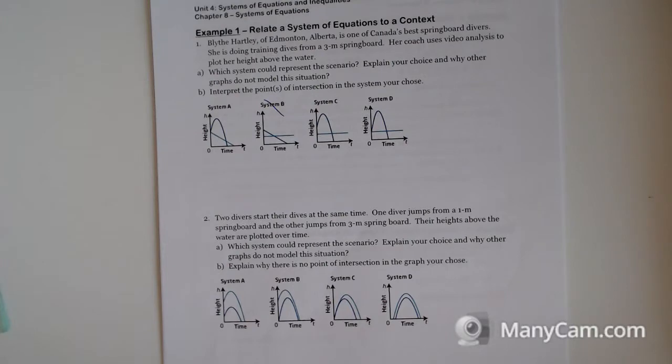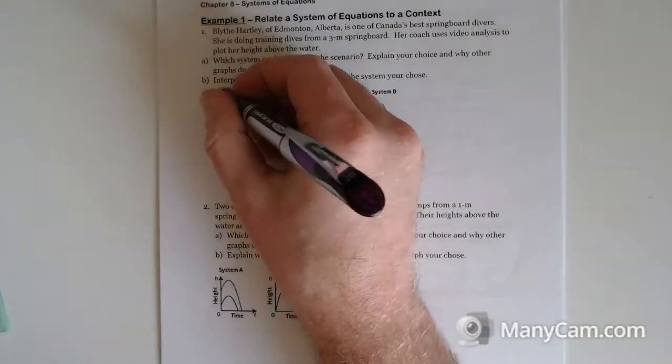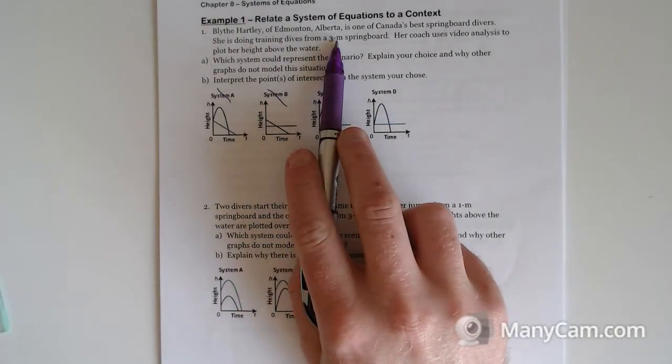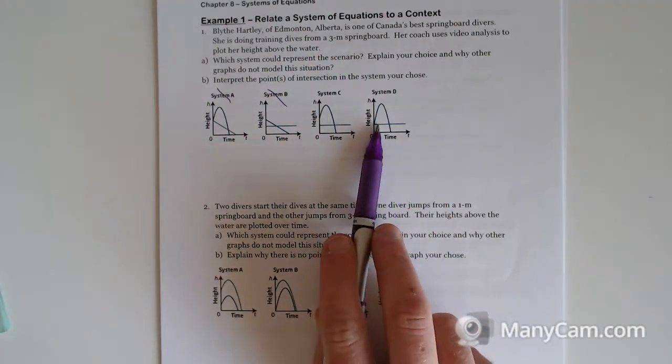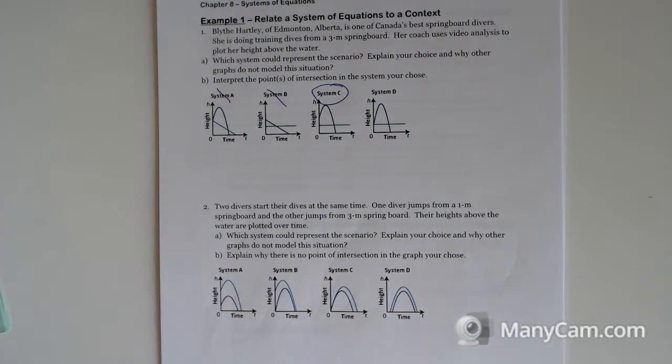We know it should start at time zero in this context, but all of these other ones start at time zero. The light blue line looks like it's the water. So if it's water, I think A can be out. Water's not going to go down over time. So it's either C or D. She starts three meters up in the air, so she does not start at water's height. She should start up in the air. System C.